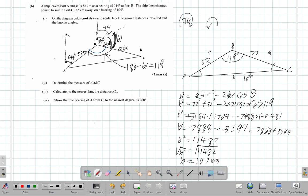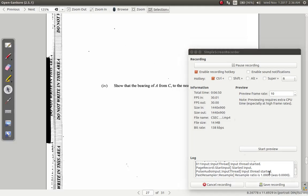So I have 107 kilometers and that is the distance AC. So that's part C and that's the answer.